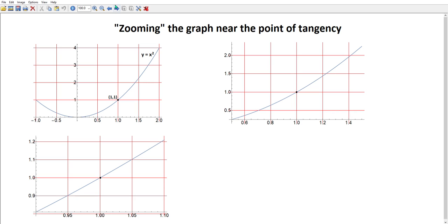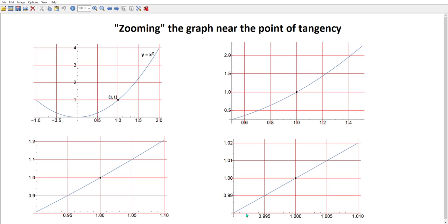But if we zoom even closer, and now this is between 0.99 and 1.01, to my eye at least, this is indistinguishable from a line. And that's in fact what it means to have a tangent line. If you zoom the curve close enough at this point, it's going to look more and more like the line. The line it looks like is the tangent line.